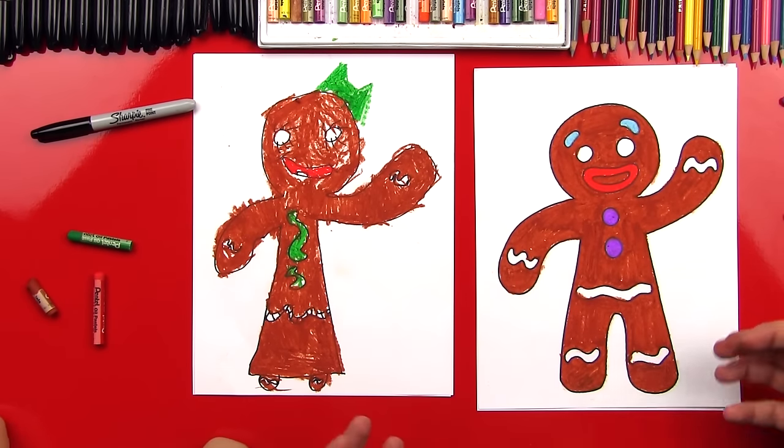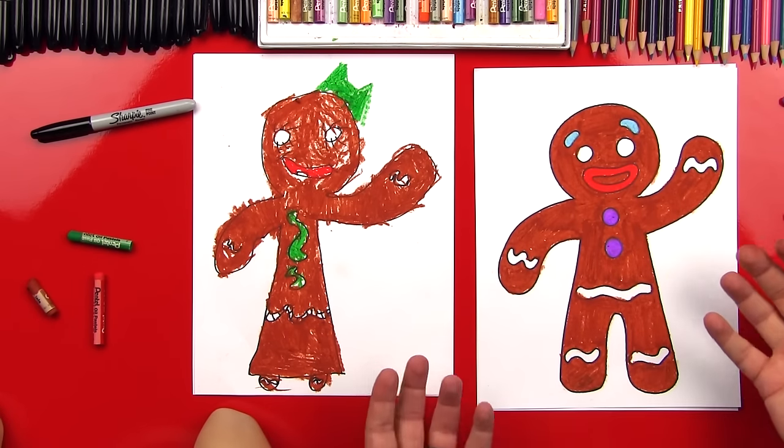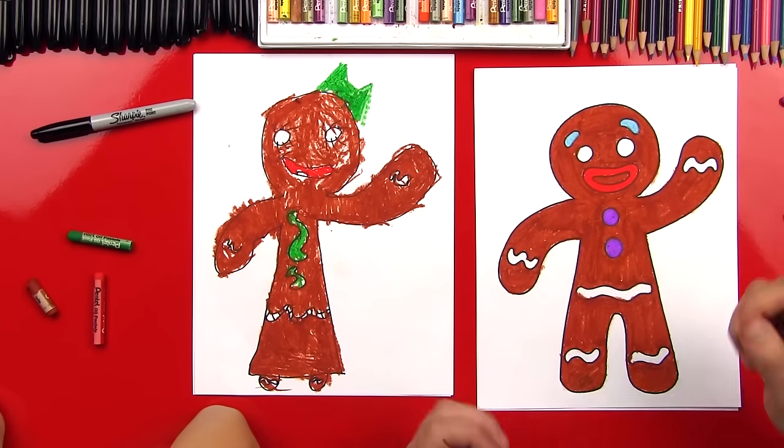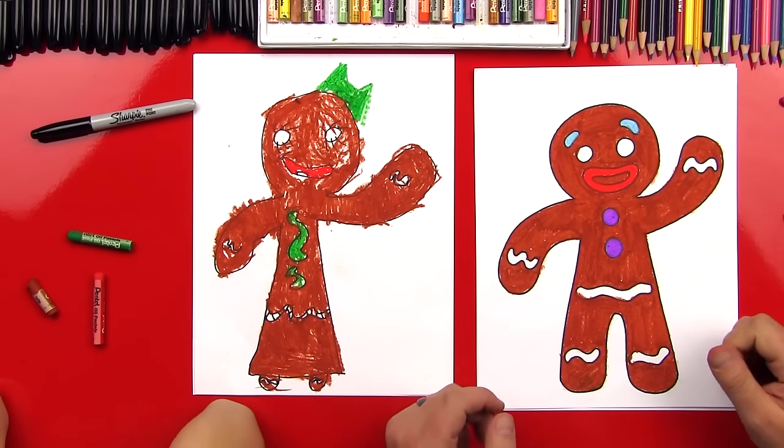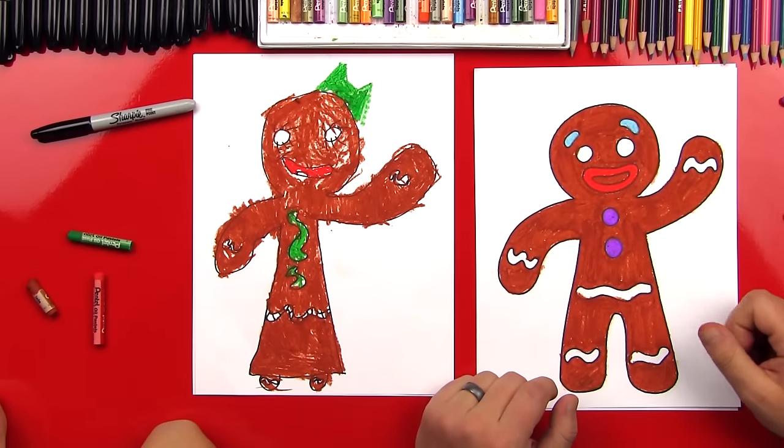The fun thing about this activity is that you really can do anything that you want. You don't have to follow our instructions. We just did the outline for our gingerbread boy or girl, and then you can do any kind of decorations on the inside that you want. You can make his face even crazier. Hads, did you have fun? Yes.